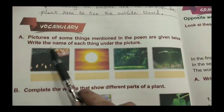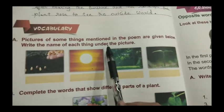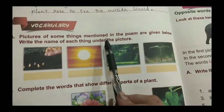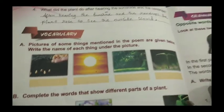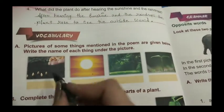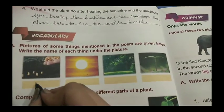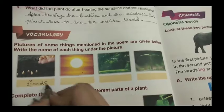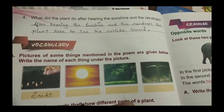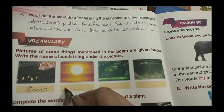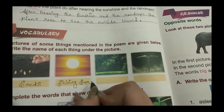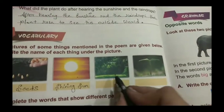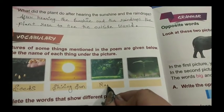Now come to the vocabulary part. Here we have some pictures of things mentioned in the poem. We need to write the name of each thing under the picture. The first picture shows rain — R, A, I, N — rain.